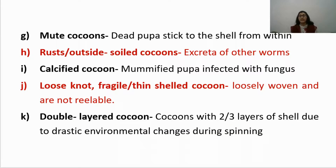Mute cocoons have a dead pupa stuck to the shell from within. In a good cocoon, you can hear the pupa move when shaken; a mute cocoon produces no sound, indicating a dead pupa inside. Rust outside or soiled cocoons may be due to excreta of other worms. Calcified cocoons occur when fungal infection — such as calcino — mummifies the pupa inside. Loose knot, fragile or thin-shelled cocoons have very loose silk knots and fragile shells that cannot be reeled and must be removed.